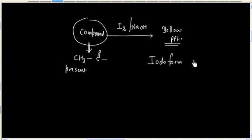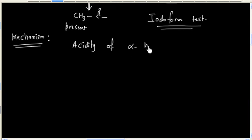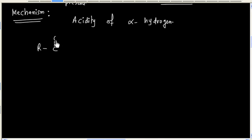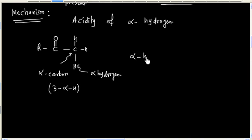This is the basis for the Iodoform test. Let us discuss the mechanism of this reaction. This reaction occurs because of the acidity of alpha-hydrogen. This hydrogen is alpha-hydrogen, and this carbon is alpha-carbon. In this case, we have 3 alpha-hydrogens, and alpha-hydrogens are acidic.